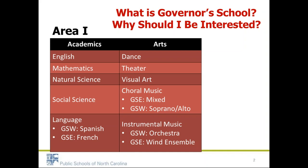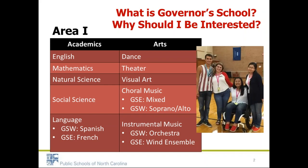Students get an amazing amount of forward-thinking instruction in their particular disciplines. They attend one class in the morning for about an hour and 15 minutes and another in the afternoon, each day Monday through Friday, and once on Saturdays. There's usually additional time for work on projects, concerts, and performances produced for the rest of the student body. This gives students a very rich experience in their chosen discipline — that's called Area One — and it is the experience for which they are being nominated and ultimately selected.